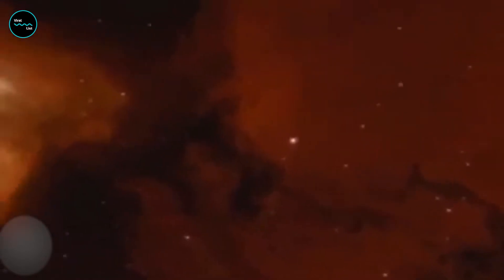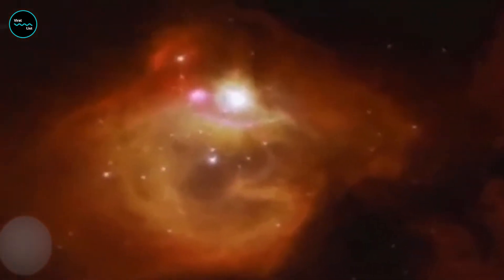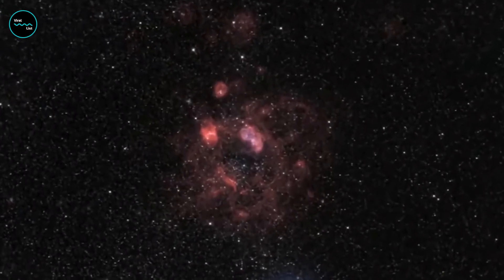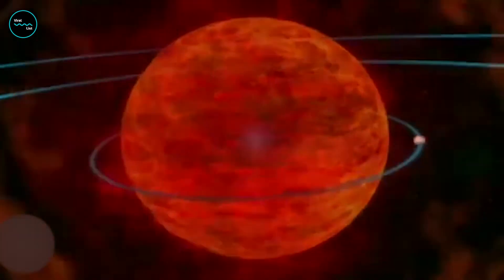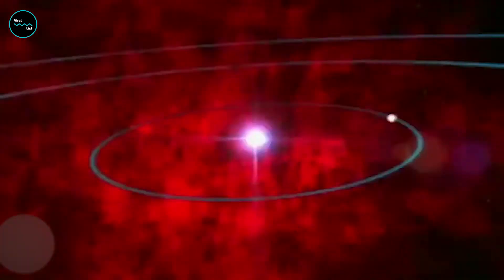Of course, the sun is a fairly average-sized star. There are some enormous stars out there. For example, the red giant Betelgeuse has a radius of 936 times the radius of the sun. That gives it hundreds of millions of times more volume than the sun.